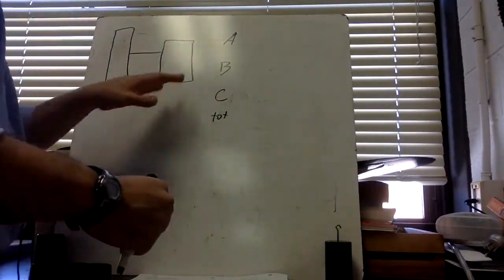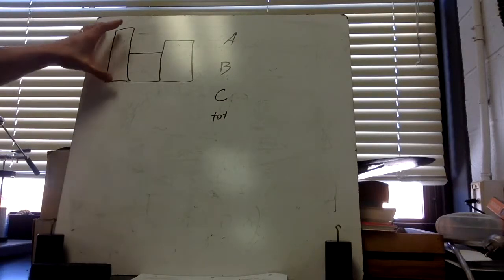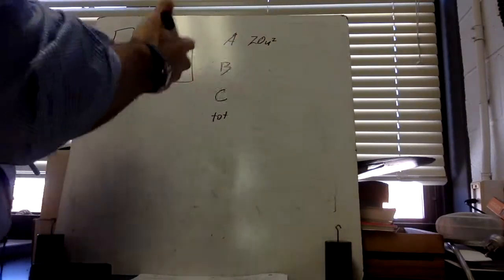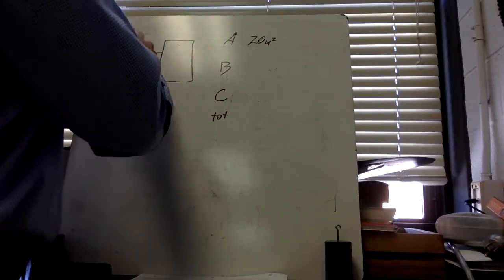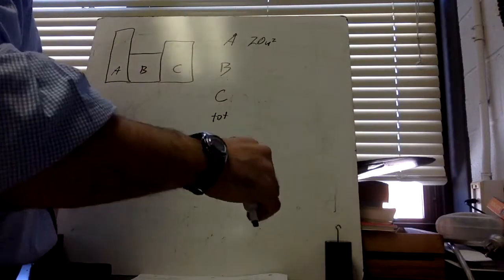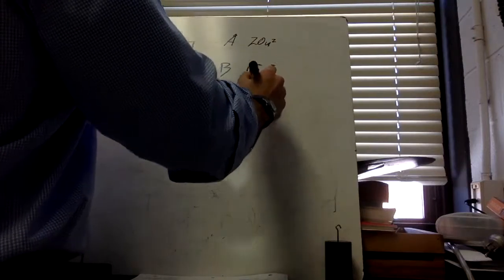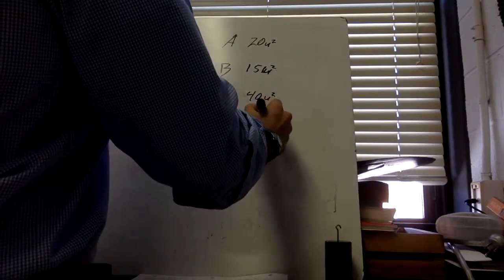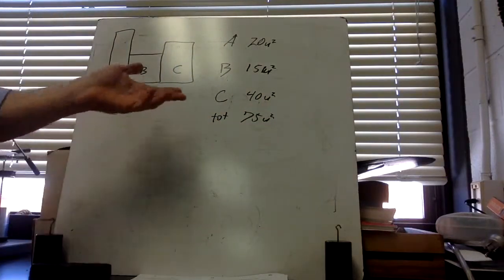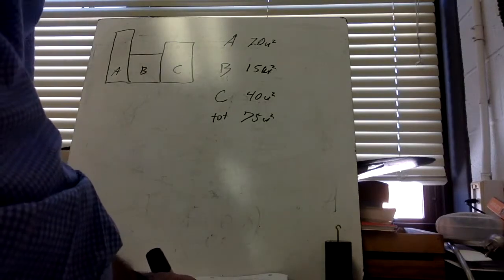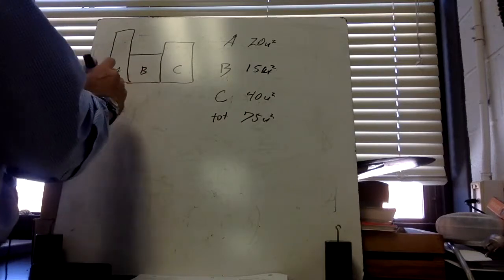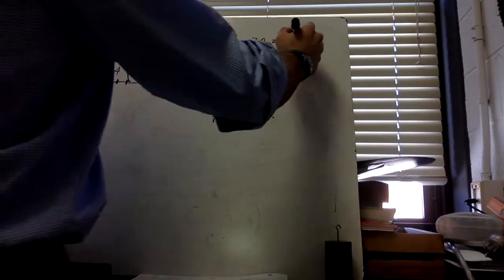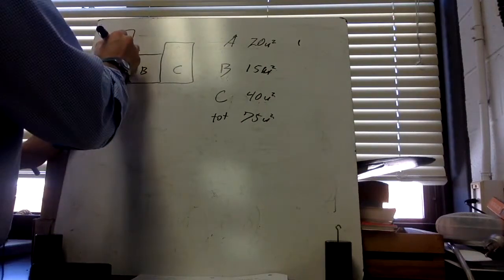Here's our object and the chart off to the side. Counting the unit areas: section A has 20 square units, section B has 15 square units, and section C has 40 square units, giving a total mass — in terms of area — of 75 square units. For section A: it's 2 units wide, so the center is at x = 1; it's 10 units tall, so the center is at y = 5.